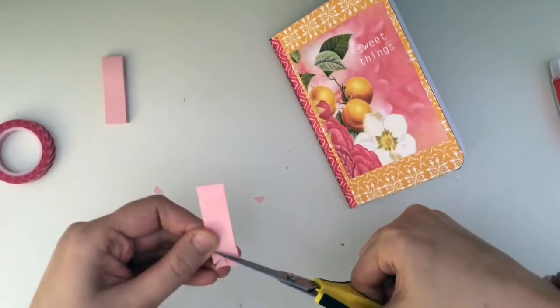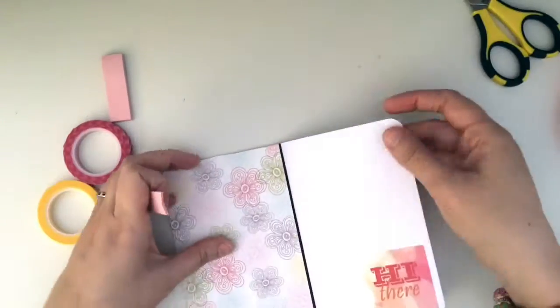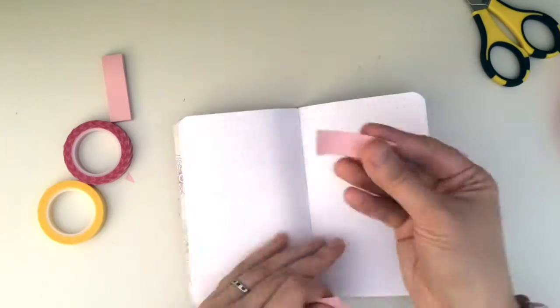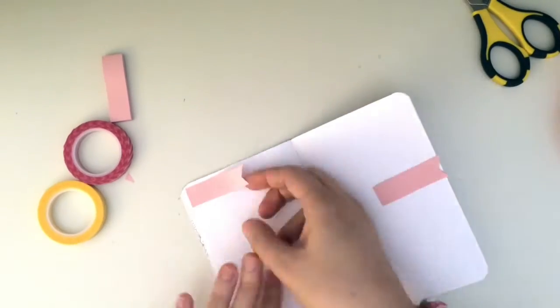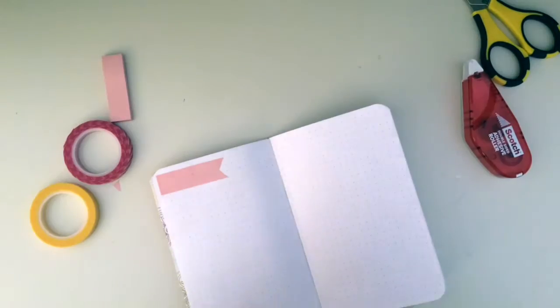So now what I'm doing with these post-it flags is I'm cutting them into a pretty little flag pattern and I'm going to use these for the dates in my gratitude journal. So I stuck it on, but it wasn't really sticky. I mean, it's just a post-it note. So I did have to use the adhesive again.